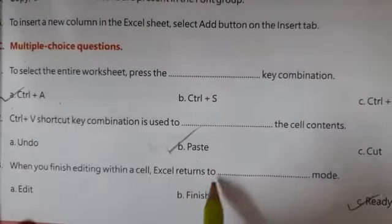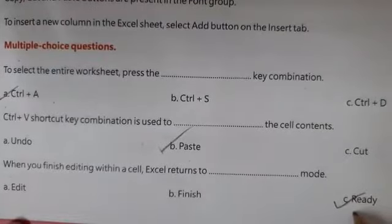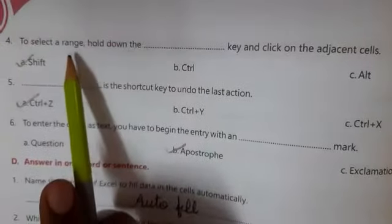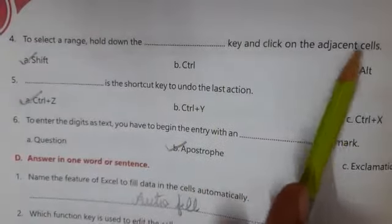Number three: When you finish editing within a cell, Excel returns to the ready mode. Okay, now turn the page. Number four: To select a range, hold down the shift key and click on the adjacent cell.